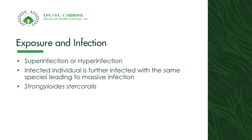Super-infection or hyper-infection occurs when an infected individual is further infected by the same species, leading to a massive infection. An example is Strongyloides stercoralis, which can cause rectal prolapse — a severe condition where the large intestine protrudes through the anal region.